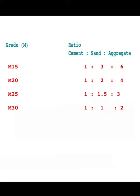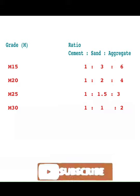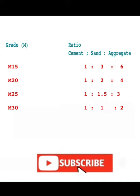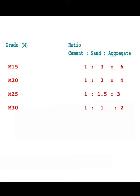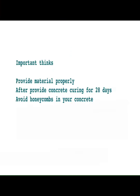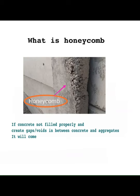This means if you provide one box of cement, you should provide three boxes of sand and six boxes of aggregate — that is M15 concrete. You can choose whatever grade of concrete you need. The important things are: provide materials properly, cure the concrete for 28 days, and avoid honeycombs in your concrete.